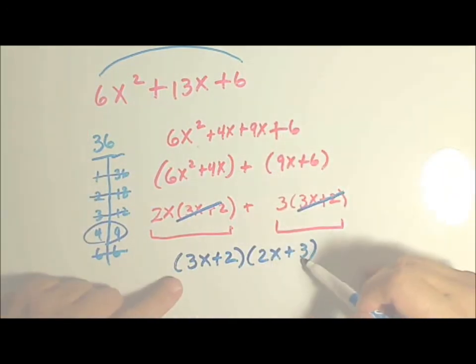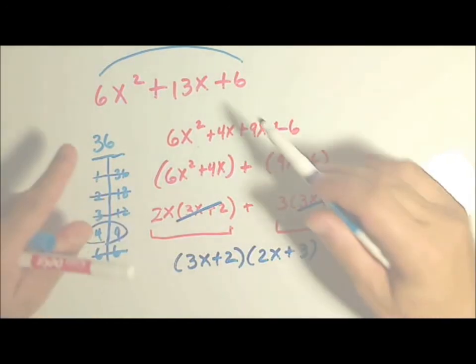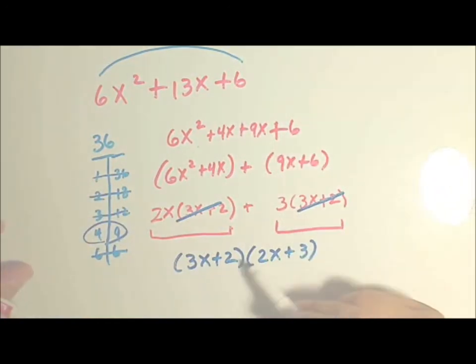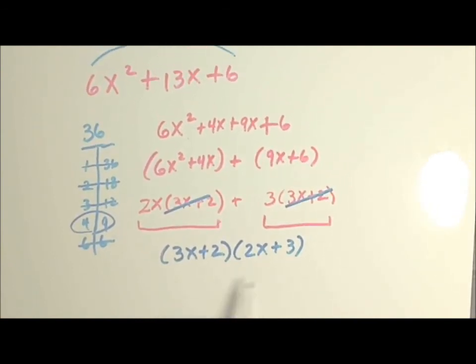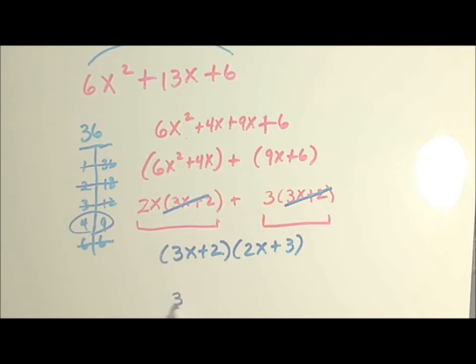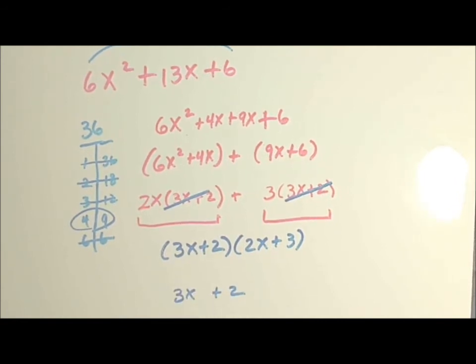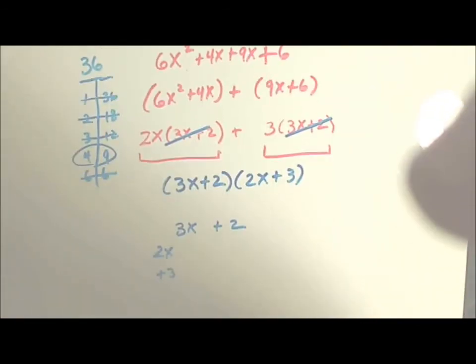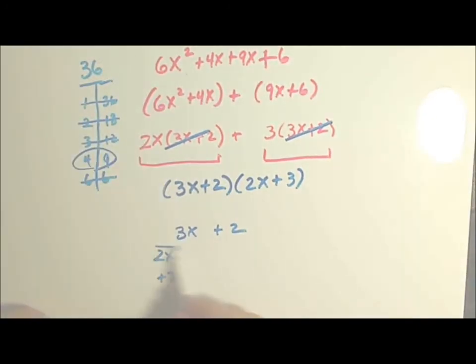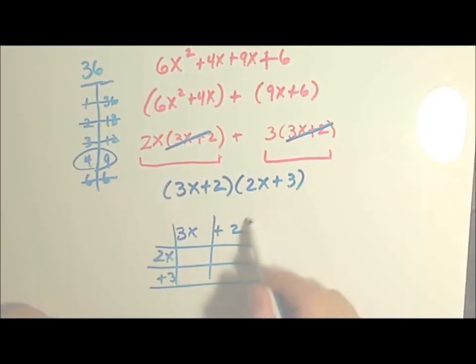So if I multiply these two binomials, they should go back to my original trinomial. This should be the factor of this trinomial. To double check, you simply multiply. So to double check this, I will multiply these two binomials. I have 3x plus 2, and I'm going to multiply it by 2x plus 3.